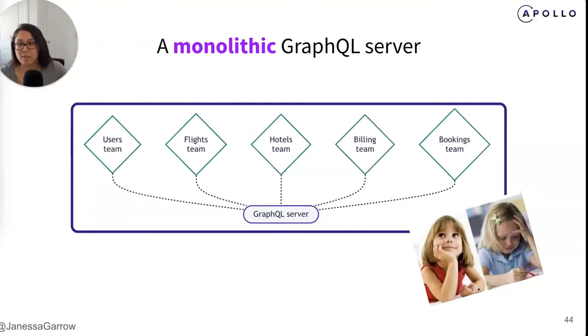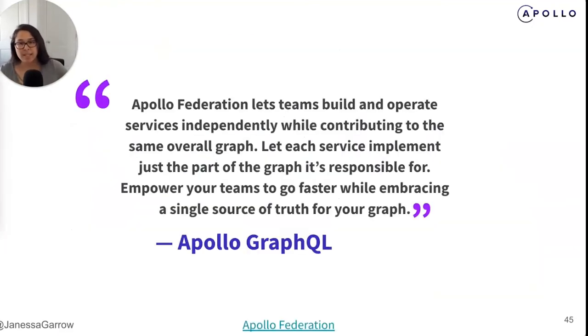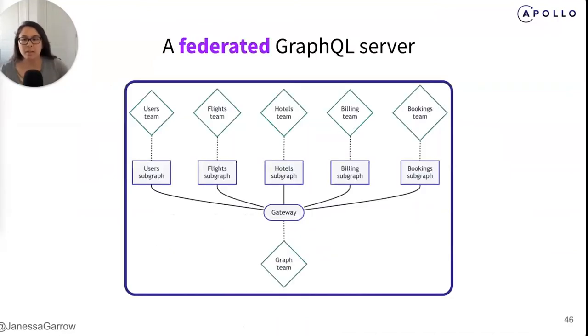Apollo Federation lets teams build and operate services independently while contributing to the same overall Graph. Let each service implement just the part of the Graph it's responsible for. Empower your teams to go faster while embracing a single source of truth for your Graph. Essentially, Federation is an architecture for creating modularized Graphs, so no more monolithic schema. With Federation, your schema is split up by concerns, eliminating those duplication problems while still keeping different types as contained as possible and without exposing different subgraph schemas to each other.